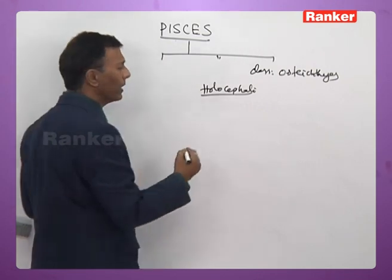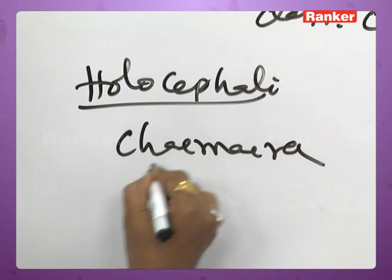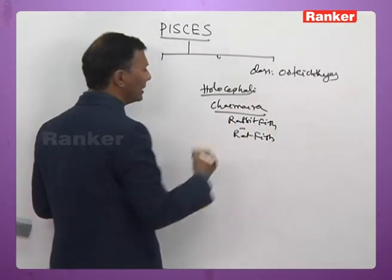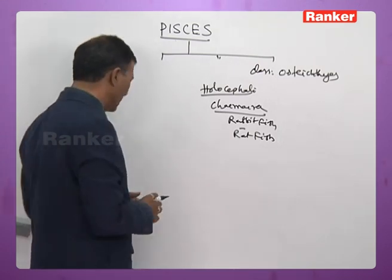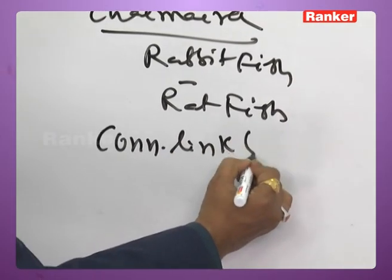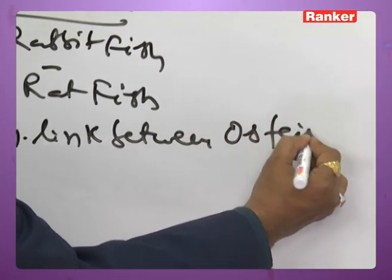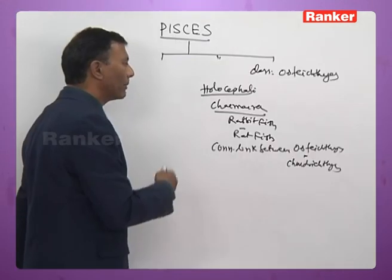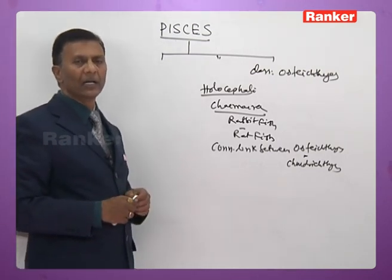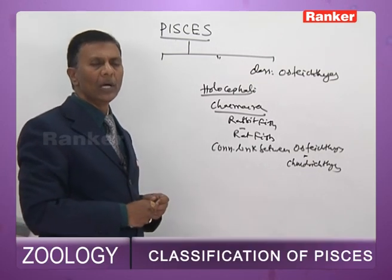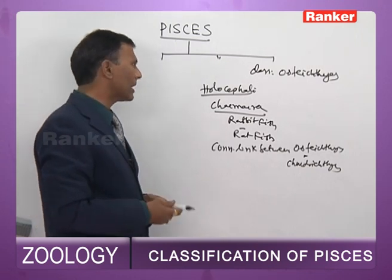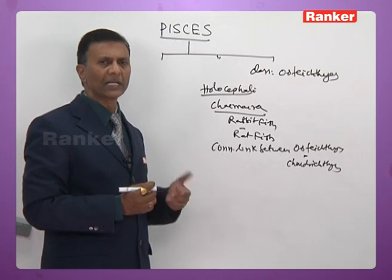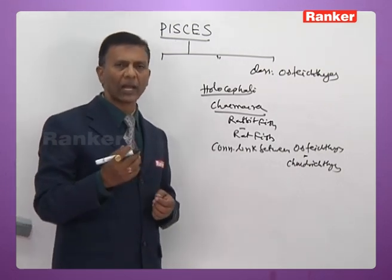The Holocephali includes the best example: Chimaera, commonly called rabbit fish or rat fish. Chimaera is the connecting link between Chondrichthyes and Osteichthyes. It belongs to the subclass Holocephali under class Chondrichthyes. Besides cartilage fish characters, it exhibits bony fish characters also, like the presence of an operculum.